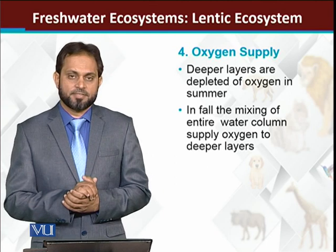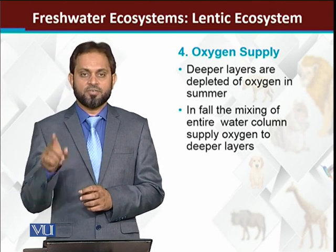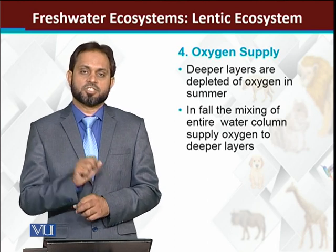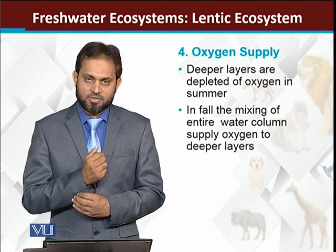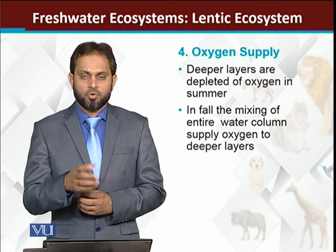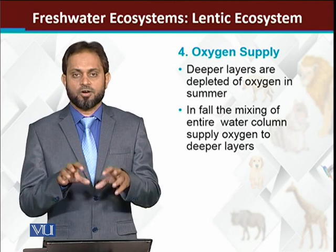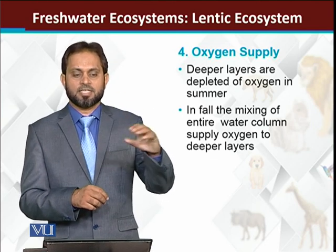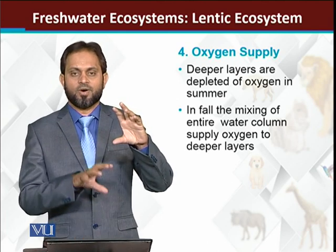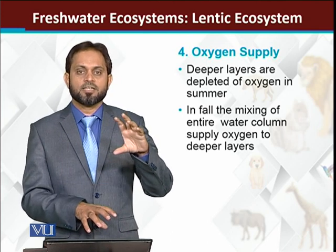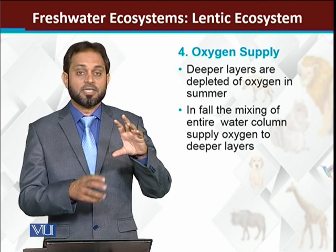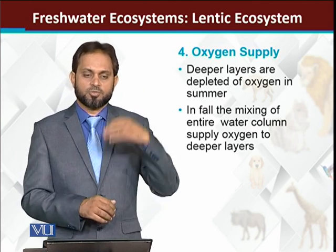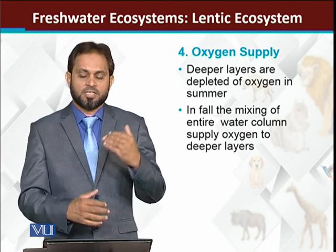How is oxygen supplied in a lentic ecosystem? Lentic ecosystems have oxygen deficiency, so only those animals can survive which can bear oxygen stress. Oxygen is mainly provided by different types of algae — the producers in the upper layers. The bottom of the water will be more deficient in oxygen, so bottom-dwelling organisms must be able to survive with low oxygen concentrations. During autumn, water layers mix up, allowing oxygen from the top to reach the bottom. During summer or winter, this mixing is at a minimum.